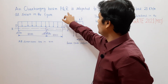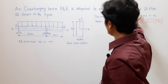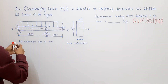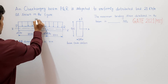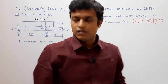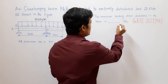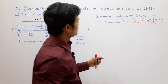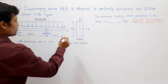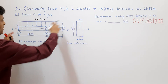An overhanging beam PQR is subjected to a uniformly distributed load of 20 kilonewton per meter as shown in the figure. The maximum bending stress developed in the beam is to be determined in MPa. The cross section of the beam is also given here, with all dimensions in millimeter.